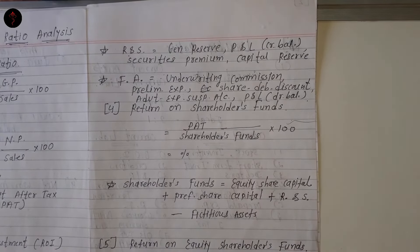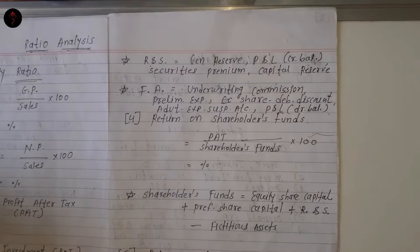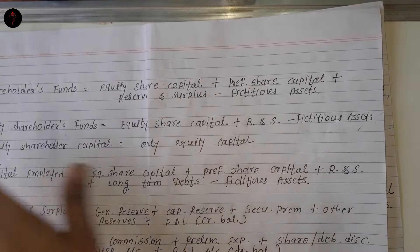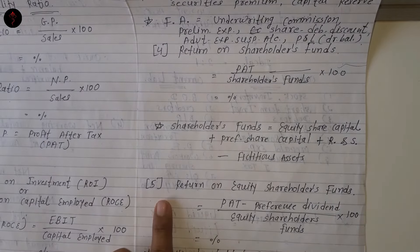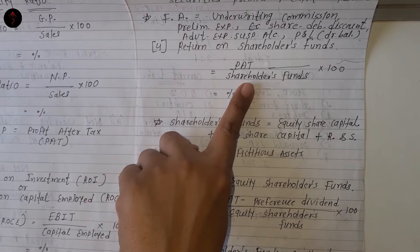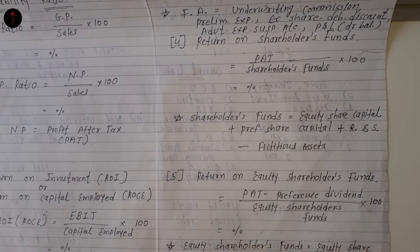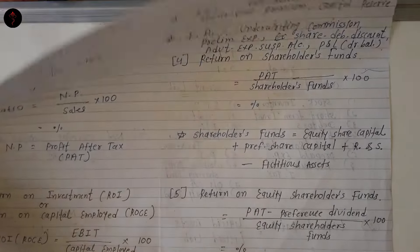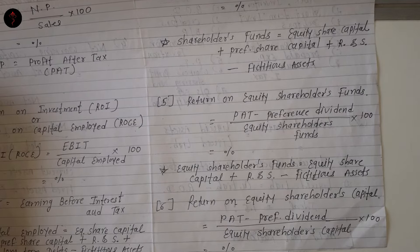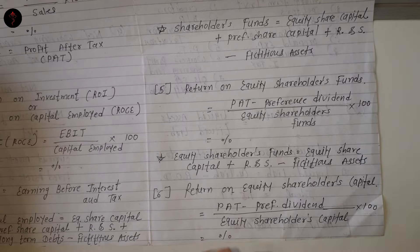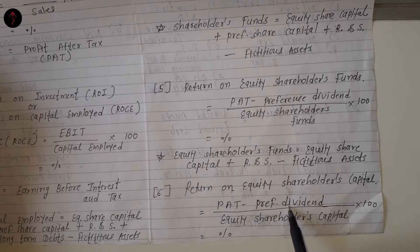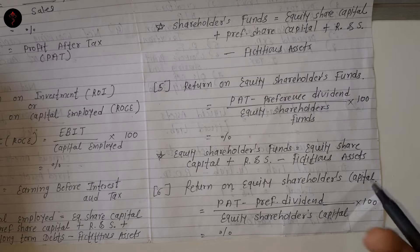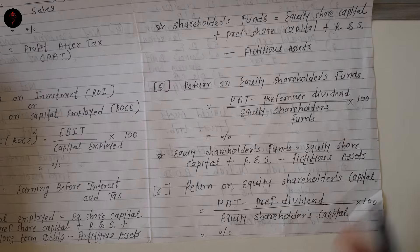Interest is a third party liability और tax definitely government को देना है, तो उससे पहले यानि आपका raw profit. Number four है return on shareholders fund — profit after tax — आपके shareholders ने आपको जो पैसा दिया है, उन्हें आप कितना कमा के दे रहे हैं. Number five है return on equity shareholders fund — shareholders fund में equity और preference दोनों आते हैं, जबकि equity shareholders fund में सिर्फ equity. Return on equity shareholders capital के लिए हम PAT लेते हैं और उसमें से preference dividend minus करते हैं, because preference shareholders को dividend पाने का first chance होता है. Divided by equity shareholder capital.